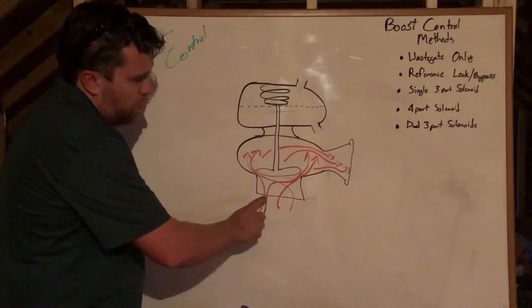This is called the dome, the top half of the gate, and then I call this the reference area. The way that a wastegate works, and I'm sure you guys have seen different sizes, the size is the actual size of the valve: 44 millimeter, 50 millimeter, 60 millimeter, dual 44, whatever you want to use.